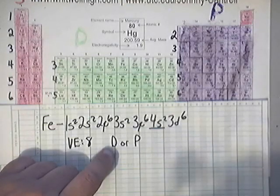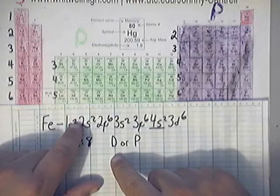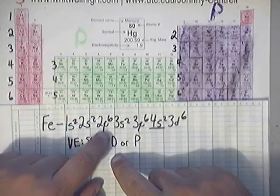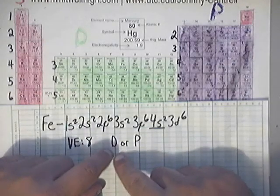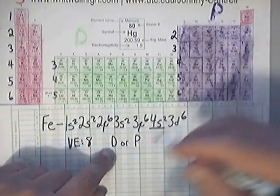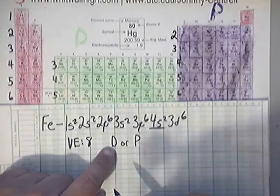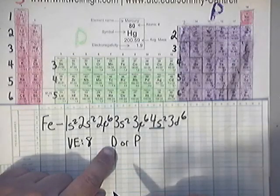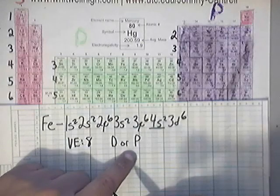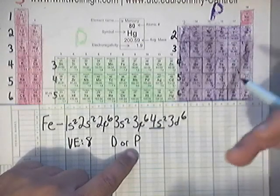An electron configuration of an element is diamagnetic if every single orbital that is written down is completely filled. Basically, s has 2, every p has a 6, and every d has a 10, and every f has a 14. So you can think of diamagnetic as being done, being done, filled.